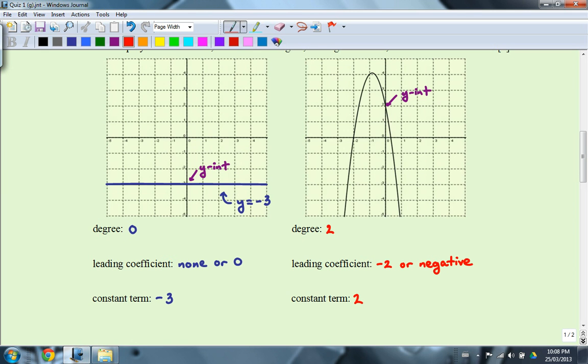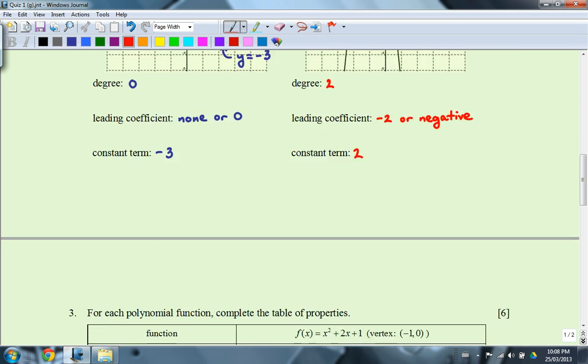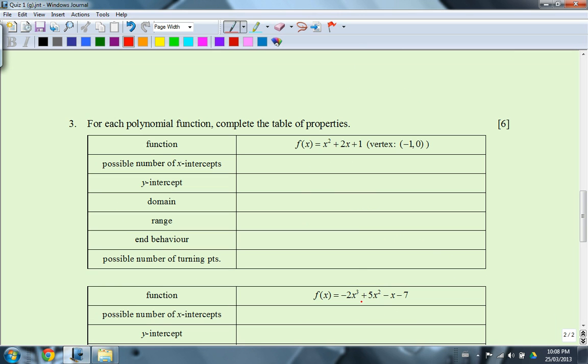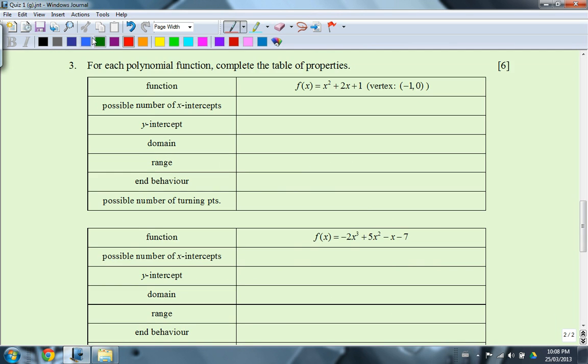So let's continue on to the second part of this quiz on the second page of the third question. For each polynomial function, complete the table of properties. So the first question here does include an extra piece of information about the vertex. And what that allows you to do is draw a quick picture of what it should look like. You will know that the one is the constant term. So it's a y-intercept. In fact, you can actually fill that in right now. So you have a vertex of negative 1, 0, a y-intercept of 1. So your parabola is going to look something like this. It's going to be symmetric about the vertex.